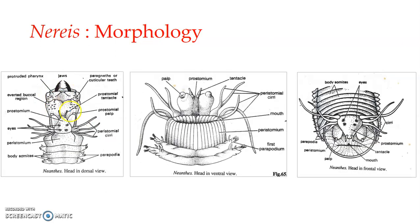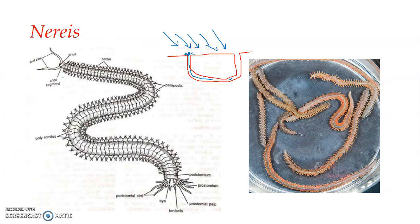When the pharynx is protruded out of the mouth, it shows off the jaws, and with these structures it holds on to the prey. The prey is dragged into the burrow. The pharynx is provided with chitinous teeth and jaws for this purpose, and the captured prey is dragged into the burrow and eaten there. Occasionally the worm leaves its burrow and moves beneath stones, rocks, or among seaweeds, but they leave the burrow permanently during the breeding season.